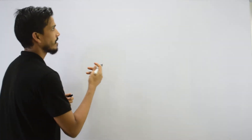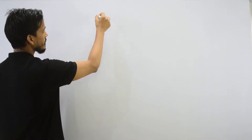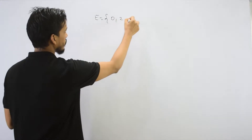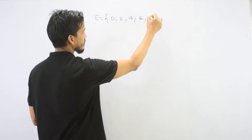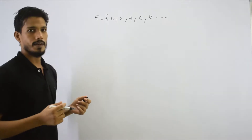Hello everyone. In today's video, we will solve problems related to countable and uncountable sets. In the last video, we discussed the definition of what is a countable set and an uncountable set. For example, what is the countable set of even numbers? It is 0, 2, 4, 6, 8 and so on. This is the set of even numbers.